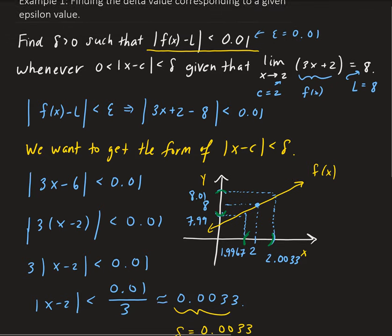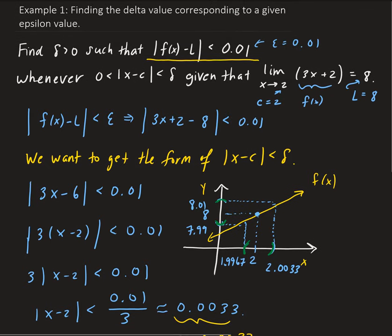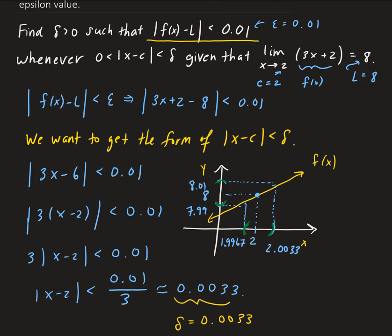We were given epsilon, and we were able to use the formal definition of the limit to obtain the corresponding delta value. This is what it looks like pictorially — along the y-axis we have an epsilon neighborhood, and along the x-axis we have a delta neighborhood.